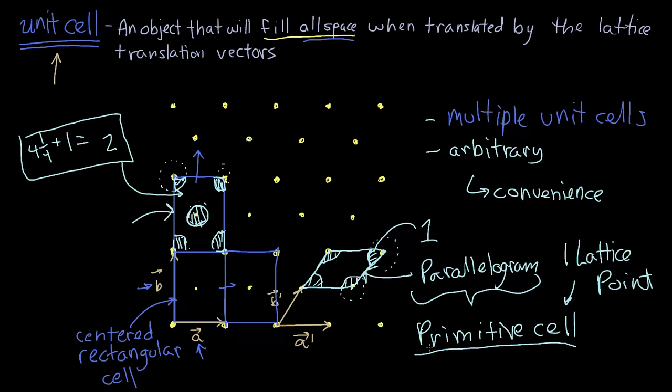The primitive cell is not special, really, other than the fact that it has one lattice point. In many cases, when we go and start working in three dimensions, the primitive cell can look very strange. And we tend to work more with cells that have two or more points in them, non-primitive unit cells.